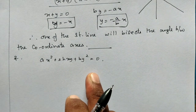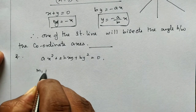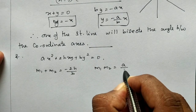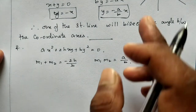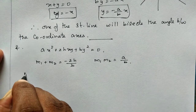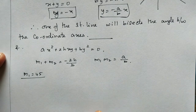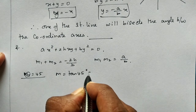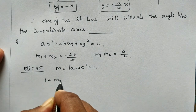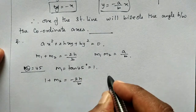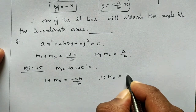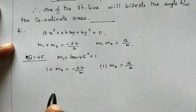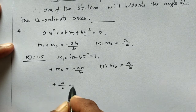We need to use the slope formulas. Sum of slopes: M1 + M2 = -2H/B. Product of slopes: M1 × M2 = A/B. This is our formula for the straight line bisecting the coordinate axis. That is M1, and M1 × M2 = A/B, so M2 = A/B.